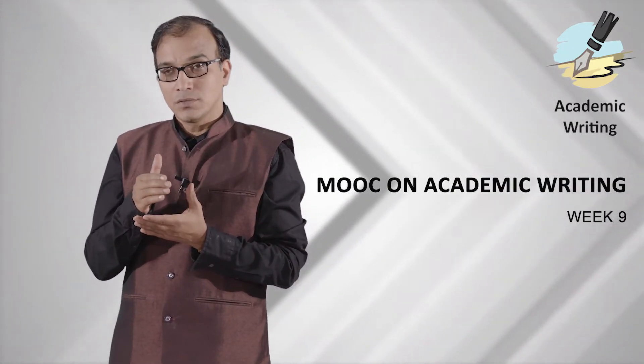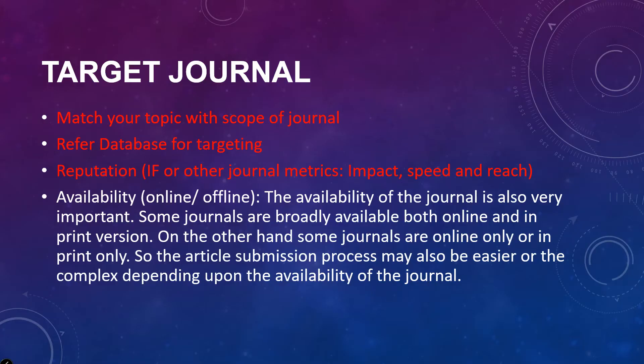Dear learners, in continuation to our discussion of targeting the journal for our research article, the next factor is availability — online or offline. If a journal is available online, that would be good for you. Many reputed journals are offline only, but you have to choose depending upon your priority. In arts and humanities and social sciences, many reputed journals are still not online but have great prestige and rapport in the field.